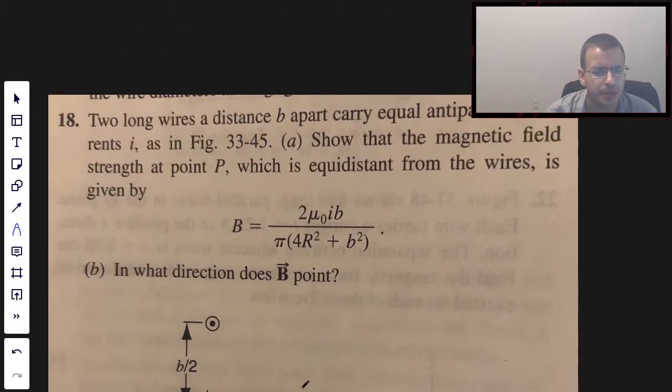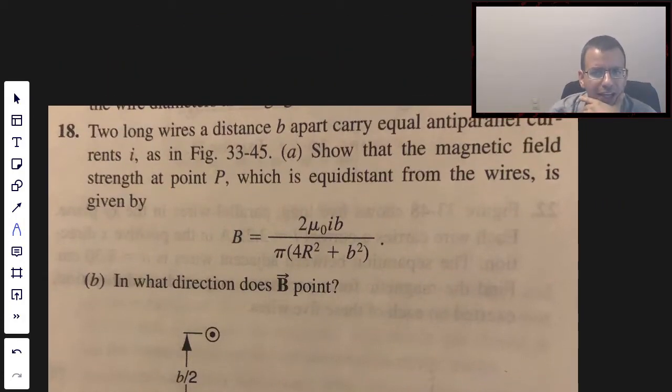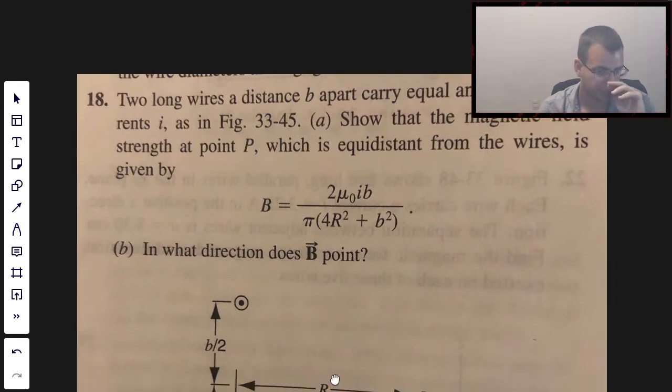Two long wires at distance B apart carry equal anti-parallel currents I, as shown in figure 33-45. Show that the magnetic field strength at point P, which is equal distance from the wires, is given by this. In what direction does B point?